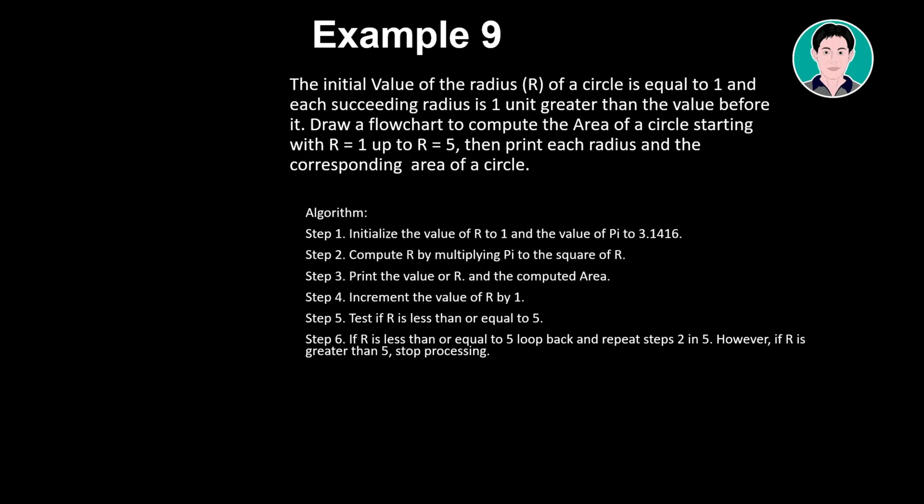Algorithm. Initialize the value of R to 1 and the value of pi to 3.1416. Compute R by multiplying pi to the square of R. Print the value of R and the computed area. Increment the value of R by 1.